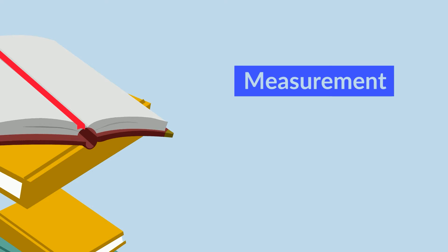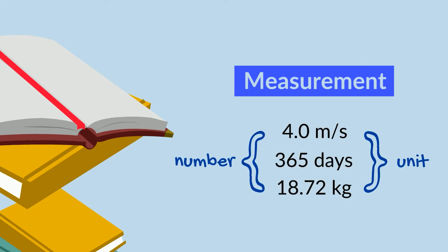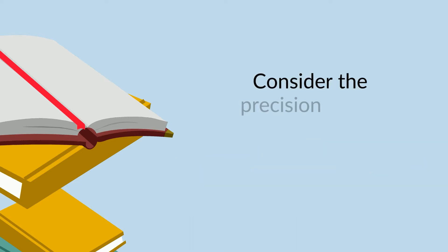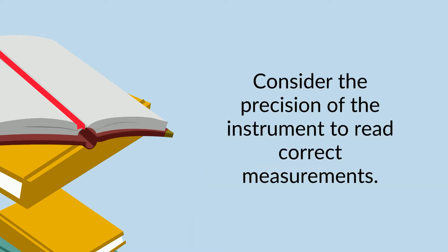Measurement is any quantity that has a number and a unit. It is fundamental to sciences. It is also important to consider the precision of the instrument to be able to produce correct measurements.